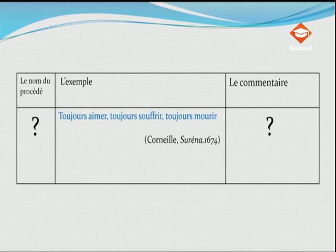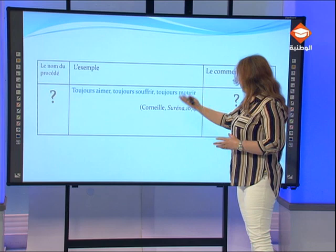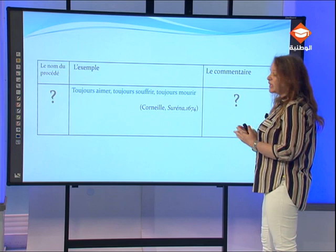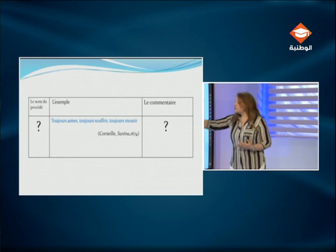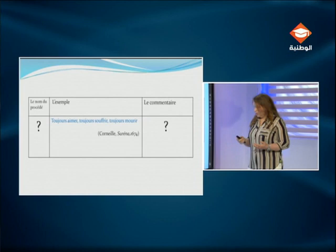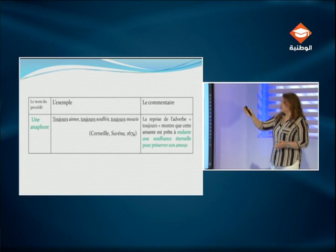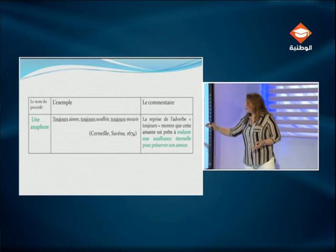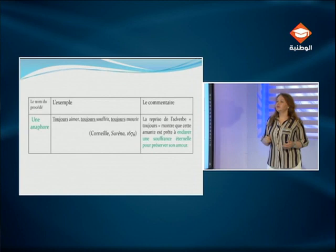Deuxième exemple : « Toujours aimer, toujours souffrir, toujours mourir. » C'est un vers de Corneille. Quel est ce procédé ? L'adverbe « toujours » est répété trois fois au début de chaque segment. C'est une anaphore. Quel est son effet ? Le personnage — Eurydice — parle à Surena et exprime ses sentiments, montrant qu'elle est prête à souffrir et à mourir pour préserver son amour. La reprise de l'adverbe « toujours » montre que cette amante est prête à endurer une souffrance éternelle pour préserver son amour.